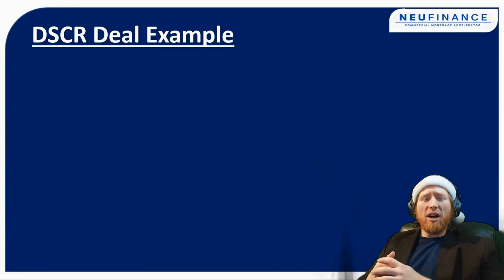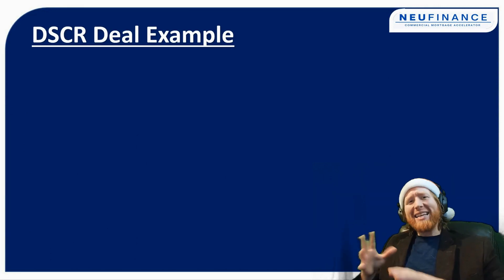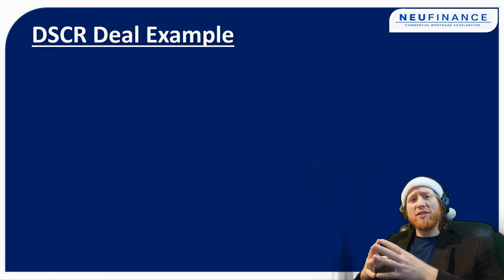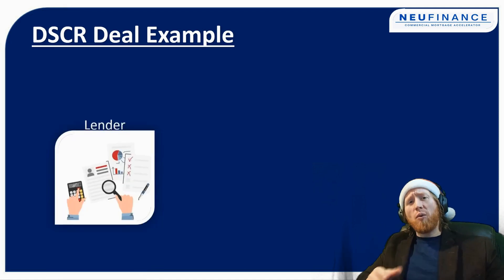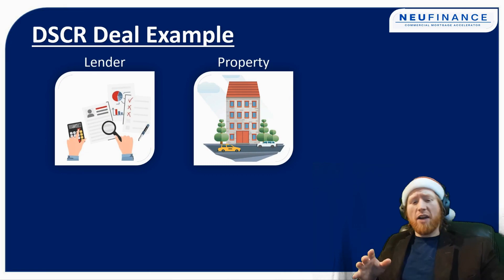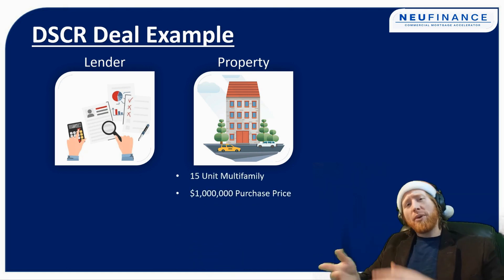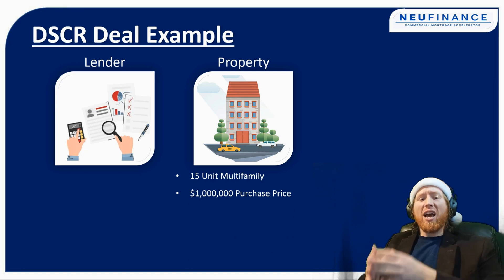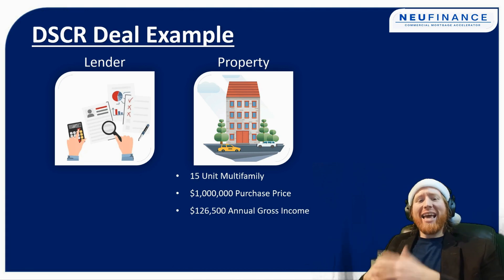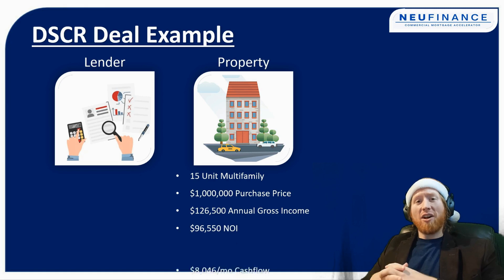Let's look at a quick example of when DSCR would come up and how to actually work that out. For any deal, there's normally three factors: there's the lender, there's the borrower, and there's the property. When we're determining the debt service ratio, all we really need is the lender requirement as well as the property. So let's say it's a 15-unit multifamily property, 100% occupied. The purchase price is a million dollars and the annual gross income is $126,000. After all the operating expenses, the NOI comes out to about $96,000 annually, which is a cashflow of $8,000 a month.